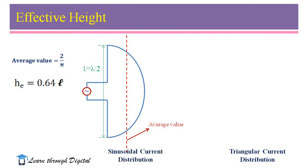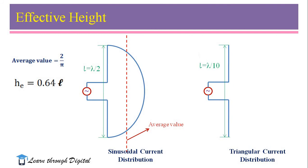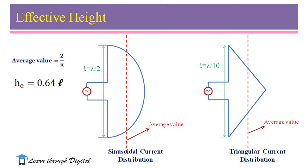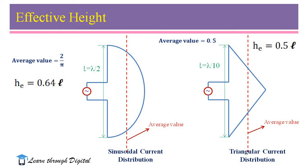In the second example, I consider a dipole antenna with a length of lambda by 10. The current distribution is a triangular current distribution. In the triangular current distribution, the current tapers uniformly towards the ends of the antenna, and when it reaches the ends the value is 0. The average value of a triangular wave is 0.5. Therefore, the effective height He is equal to the average value multiplied by the physical length, that is 0.5 multiplied by L. From these examples, we know how to calculate the effective height based on current distributions.